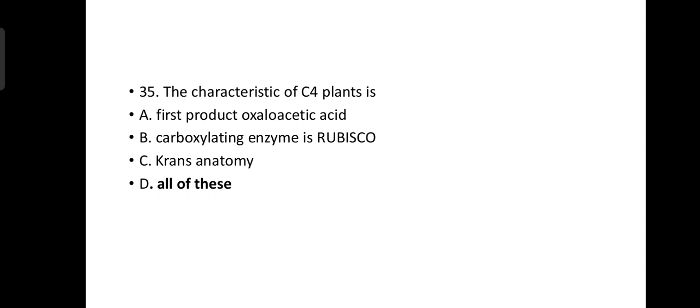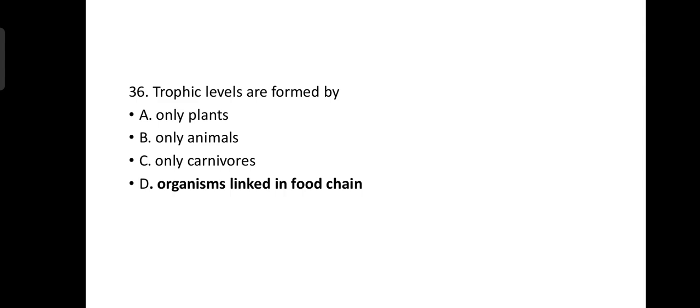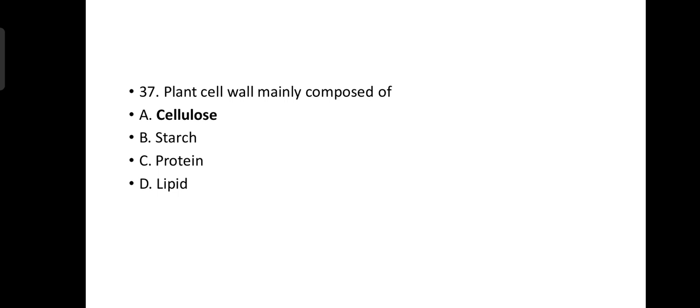Characteristic of C4 plants is all of these: they have first product oxaloacetic acid, the carboxylating enzyme is Rubisco, and they have Kranz anatomy. Trophic levels are formed by organisms linked in food chain. Plant cell wall is mainly composed of cellulose.